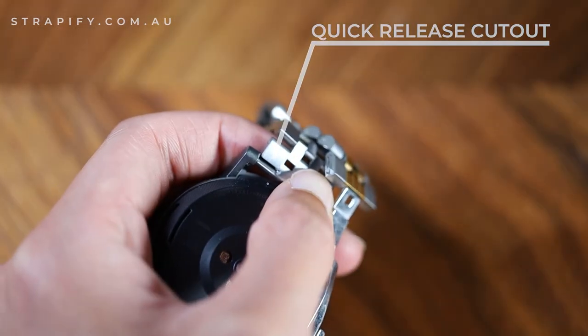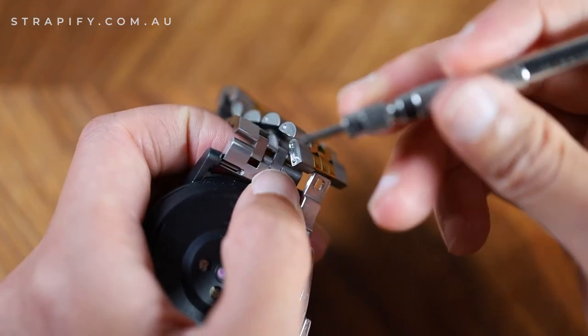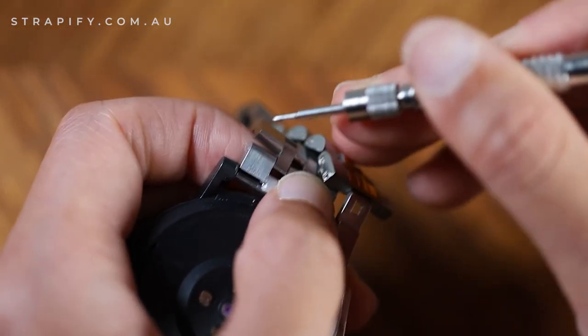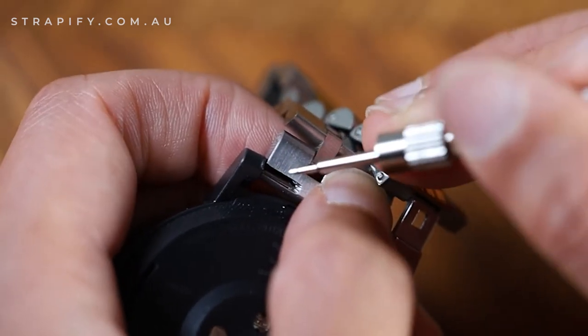What we're going to do is grab our spring bar tool and insert it into the cutout. We're just going to start to try to rotate that spring bar so we can see the hole.